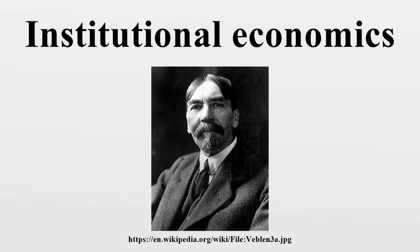John Kenneth Galbraith worked in the New Deal administration of Franklin Delano Roosevelt, although he wrote later and was more developed than the earlier institutional economists. Galbraith was critical of orthodox economics throughout the late 20th century. In The Affluent Society, Galbraith argues voters reaching a certain material wealth begin to vote against the common good. He coins the term 'conventional wisdom' to refer to the orthodox ideas that underpin the resulting conservative consensus.